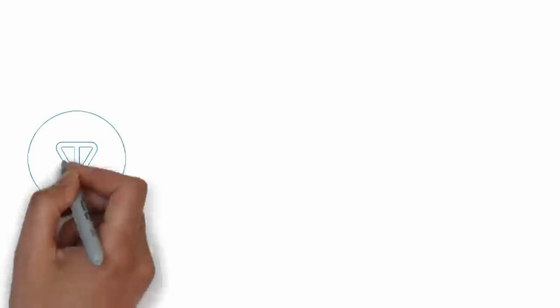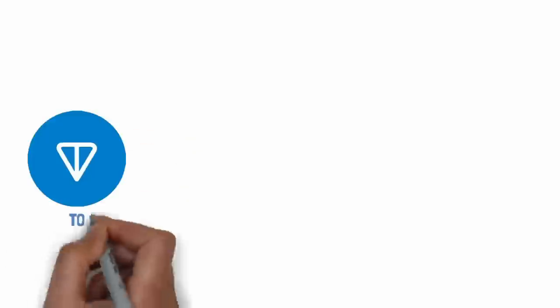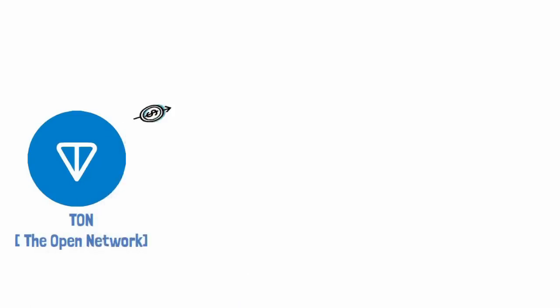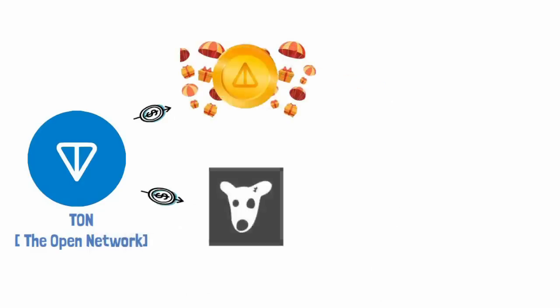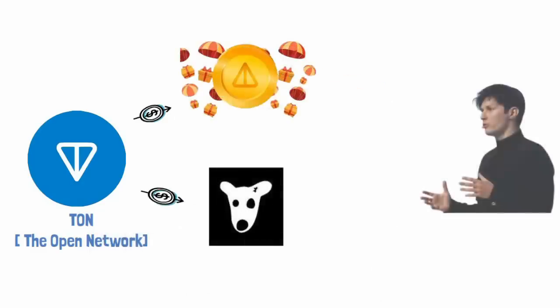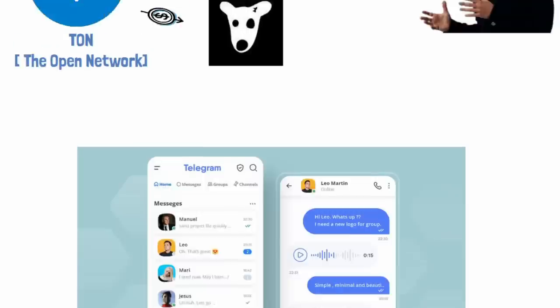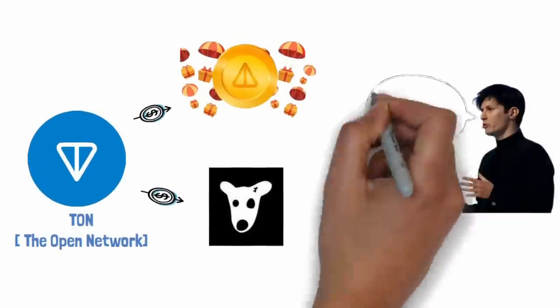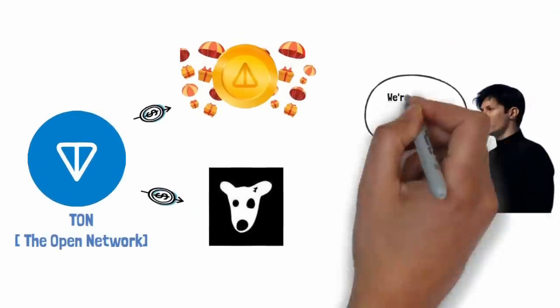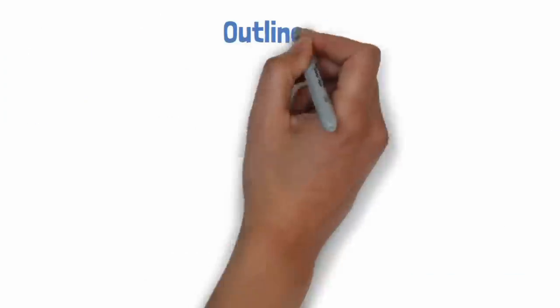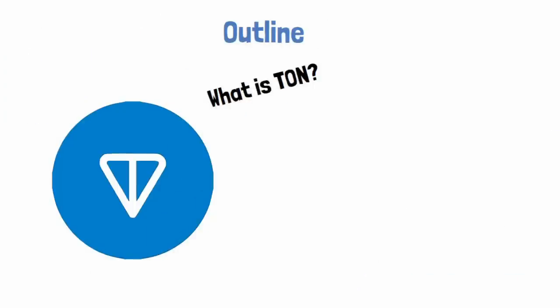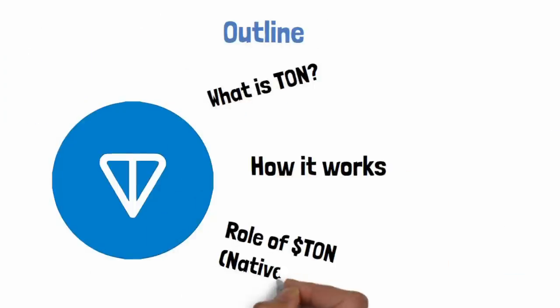Today we take a look at TON, also known as the Open Network — a fascinating blockchain project that has helped facilitate successful airdrops like Notcoin and Dogs. Given the latest buzz around the news of Pavel Durov's arrest, there's no doubt that most people know about Telegram Messenger. But did you know Telegram is deeply involved in creating its very own layer one blockchain?